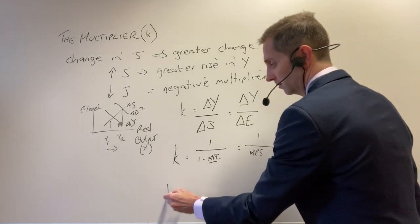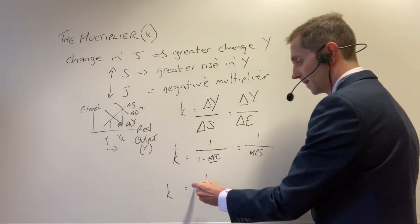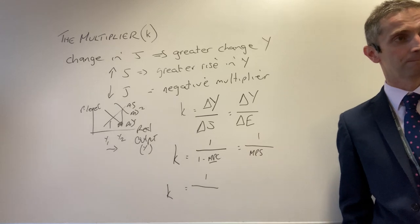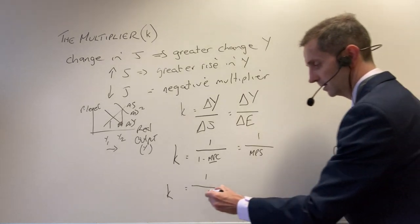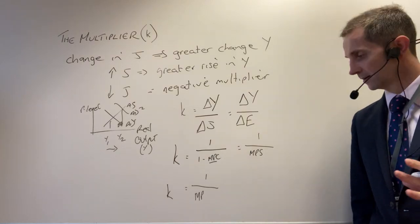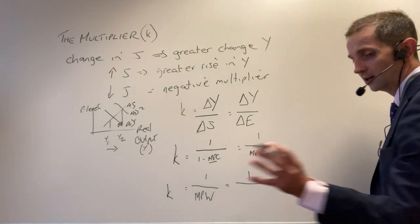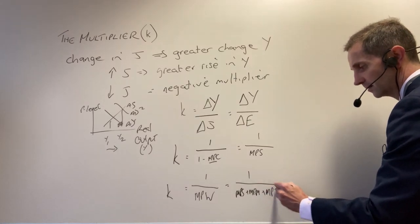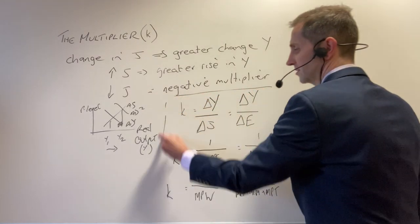In the open economy the multiplier is 1 over the marginal propensity to withdraw. You could call that 1 over MPW, which is the same as 1 over MPS plus MPM plus MPT — adding all of those withdrawals together. Now, why is it important to know those equations? You're most likely to need them for multiple choice questions, which are on paper 3. There are 30 multiple choice questions, and the paper is out of 80 — your data questions account for 50 and multiple choice for 30.